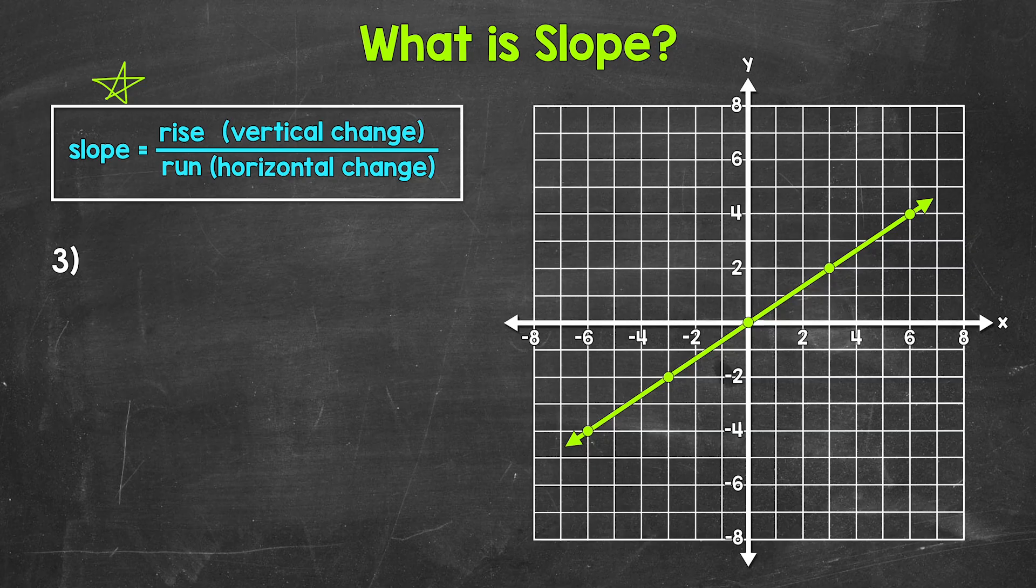Slope equals rise over run. So the vertical change over the horizontal change. Again, rise over run, which is the ratio of vertical change to the horizontal change. Basically, how fast is this line moving upward as it's moving from left to right? Now keep in mind, there is a formula we can use to find the rise and the run. But here we're going to count units in order to help us understand rise over run. What I mean by counting units is just to count how far up the rise and how far over the run we go.